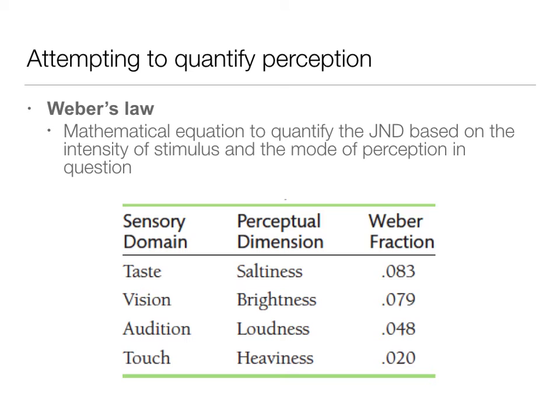That includes how loud it is, how bright it is, and what kind of perception we're talking about — whether that's taste, vision, audition, or touch. I'm not so much interested that you know the formula and how to calculate all of it. What I am interested in is that you understand the relationship between the intensity of the stimulus and the mode of perception for that just noticeable difference. Right here we have Weber's fractions, which are part of the equation. If you're trying to calculate the just noticeable difference for taste, you would need to use the Weber fraction of 0.083.